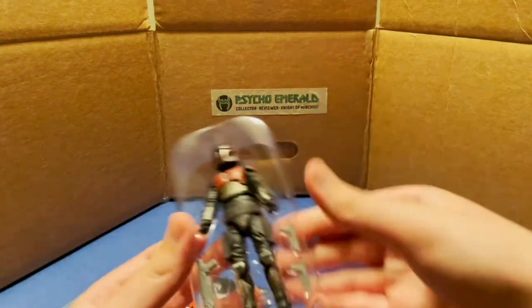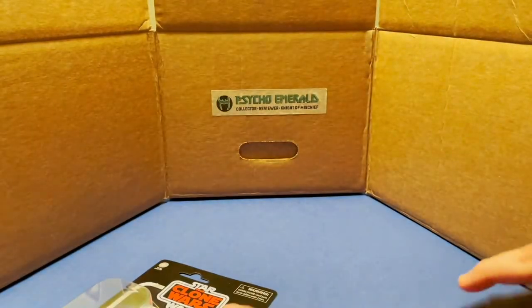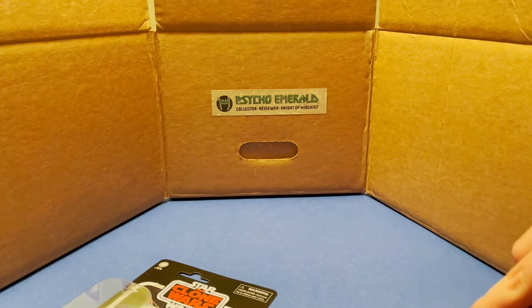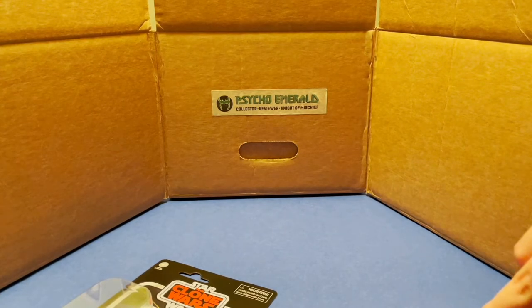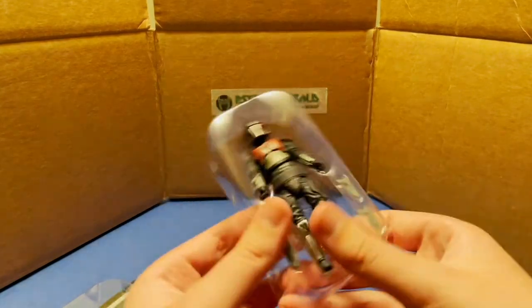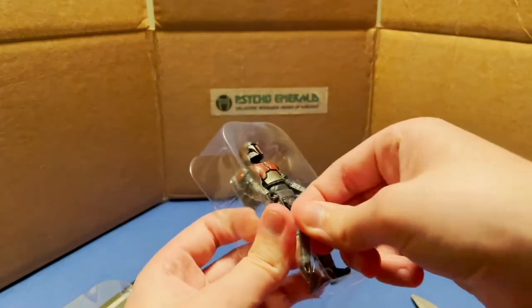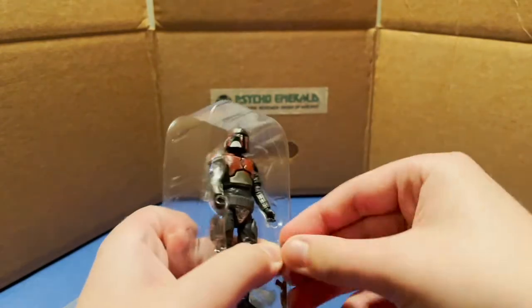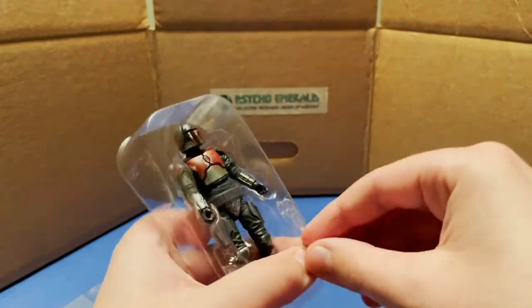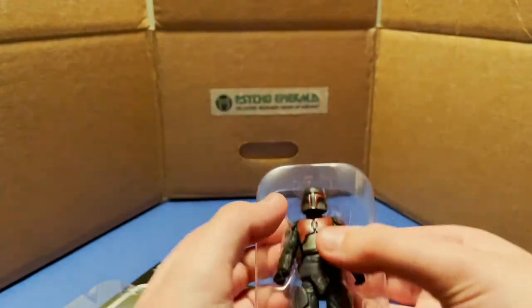Let's break him out of there. He just comes with a couple of blasters. We've got the two pistols here as well as the rifle. It's kind of a short rifle, then these two pistols which look very similar to the ones that Bo-Katan and Koska Reeves have, which is kind of cool.